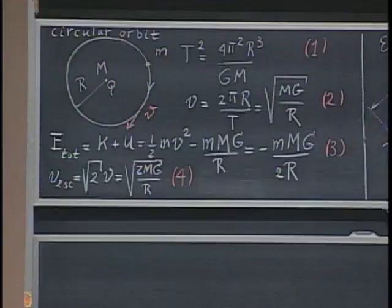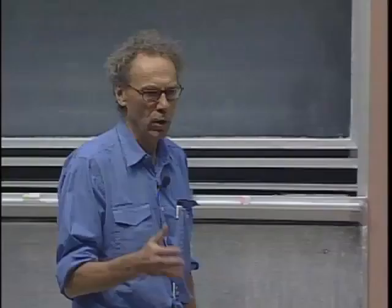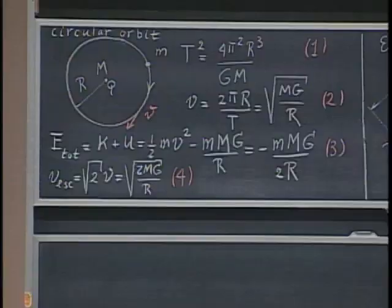Today I will talk to you about elliptical orbits and Kepler's famous laws. I first want to review briefly what we know about circular orbits. There is an object of mass little m going in a circle around capital M — this could be the Sun, it could be the Earth — at radius r, circular.